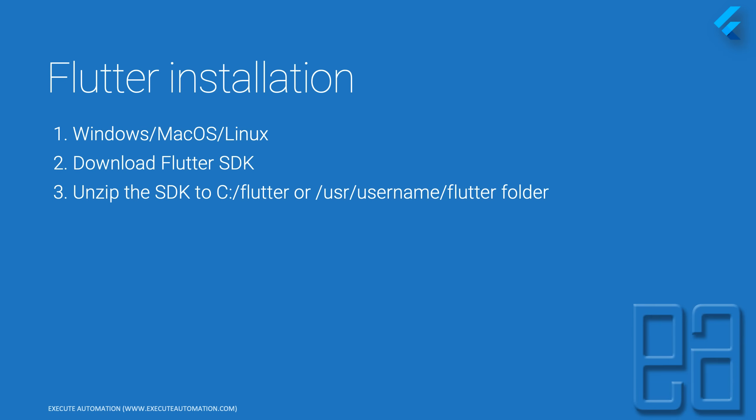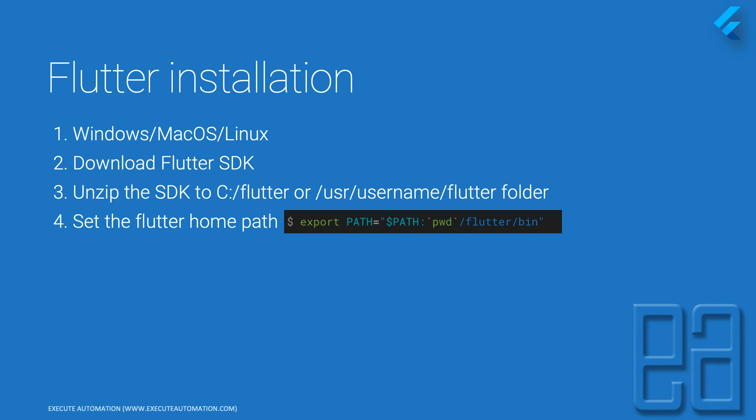Unzip the SDK to a folder like C:\flutter on Windows or ~/user/username/flutter on Mac. Then you need to set the Flutter home path. In Windows, go to environment variables and set the Flutter home path for the bin folder. On Mac, you can use a terminal command to set the path. Finally, you need to set up your IDE — either IntelliJ or Visual Studio Code — to make use of Flutter.